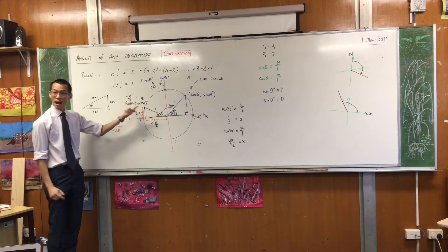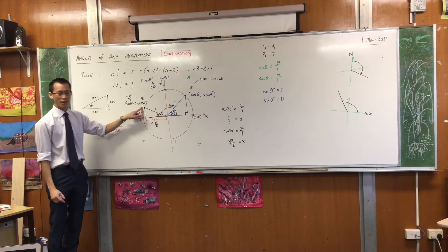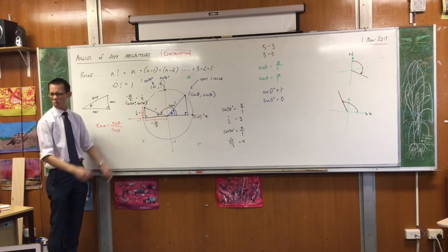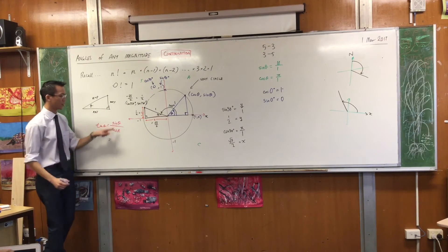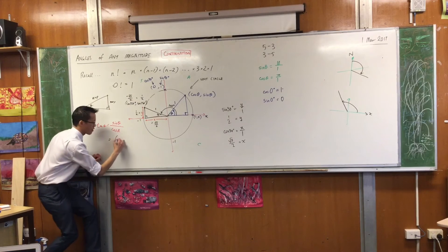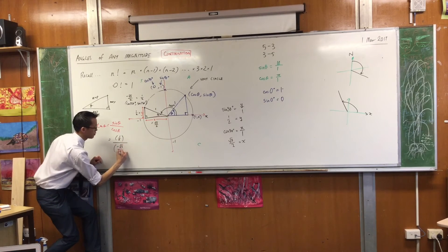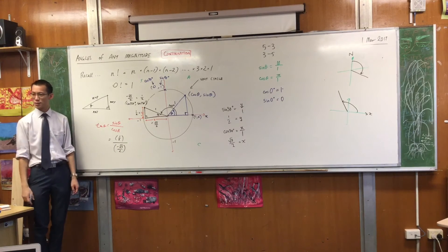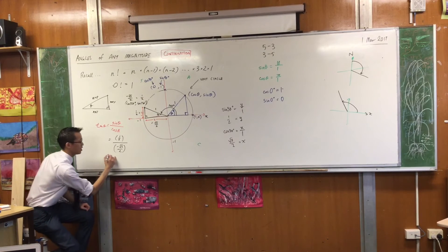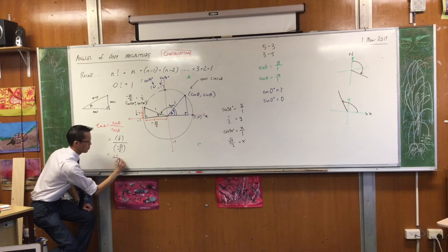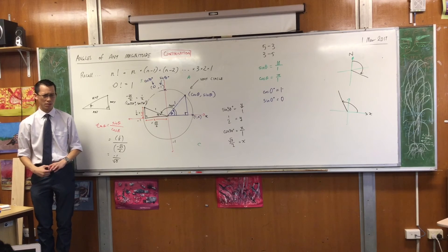So ta-da! Now I know cos 150 is negative root 3 on 2. And sin 150 is a half. Of course, you can work out what tan 150 is just from those two, right? I'm going to do it down here because I've already got this. There's a half on the numerator. There's, careful, negative root 3 on 2 on the denominator. So what happens? What can I do with this? I can multiply the top and the bottom by 2, which leaves me negative 1 on root 3. Are you happy? Do you see how we do that?